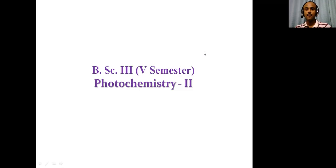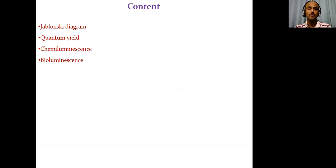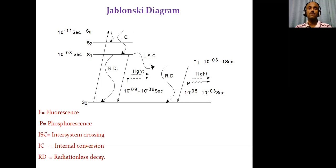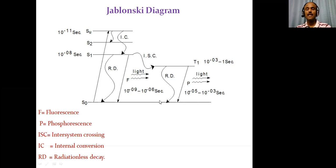Welcome, dear learners. In this video on photochemistry part two, we will discuss some important concepts such as the Jablonski diagram, quantum yield, chemiluminescence, and bioluminescence. The Jablonski diagram is very useful to explain various phenomena such as fluorescence, phosphorescence, inter-system crossing, internal conversion, and radiationless decay.